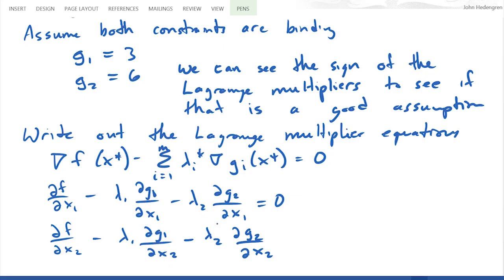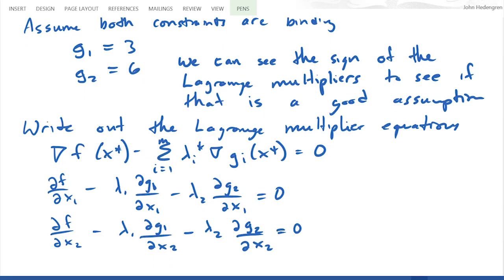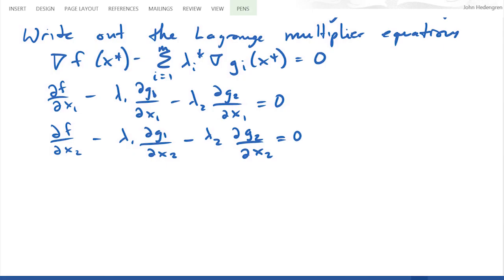So I'll just have two Lagrange multipliers in this case, lambda 1 and lambda 2. And both of those are going to be equal to zero. I'll do my third equation as well.